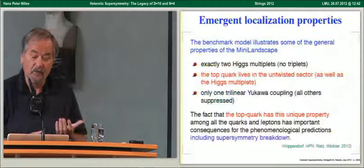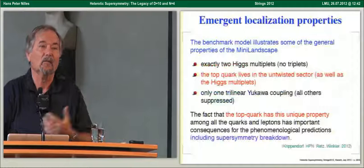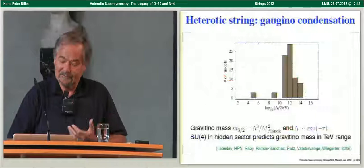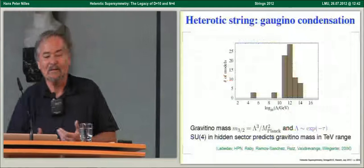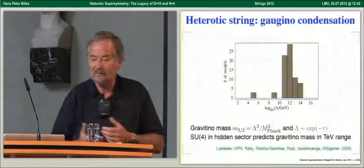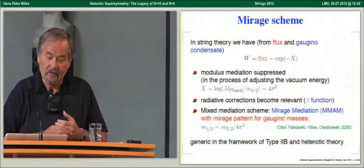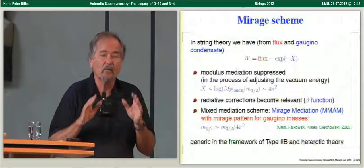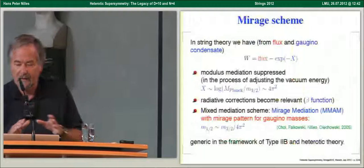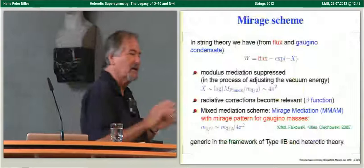Now we exploit these localization properties in a model with broken supersymmetry. These models have a hidden sector from the second E8, and the hidden sector gauge group can be determined — in most cases something like SU(4) or SO(8). If you fix the gauge coupling constant appropriately, this predicts a gravitino mass in the TeV to multi-TeV range. In string theory we generically have a flux and a non-perturbative effect such as gaugino condensation, so the potential looks like flux plus an exponential of minus X.